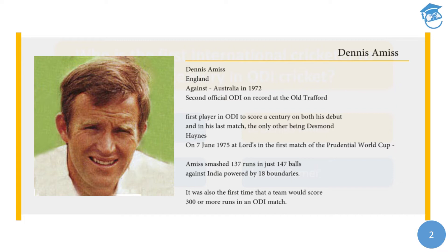On 7th June 1975 at Lord's, in the first match of the Prudential World Cup — also the very first cricket World Cup — Amiss smashed 137 runs in just 147 balls against India, powered by 18 boundaries. His innings provided enough leverage for England to post an imposing target of 335 runs for India to chase within 60 overs. It was also the first time a team scored 300 or more in an ODI. The match also featured the infamous innings of Sunil Gavaskar, who in reply to the nearly unreachable target scored an unbeaten 36 runs in 174 balls — batting all 60 overs with just one boundary.